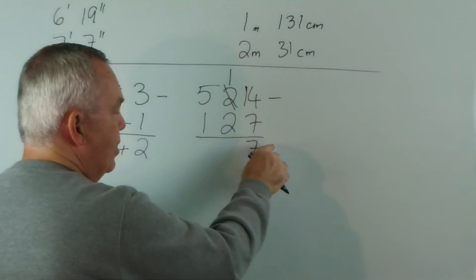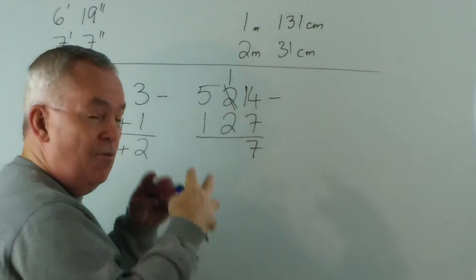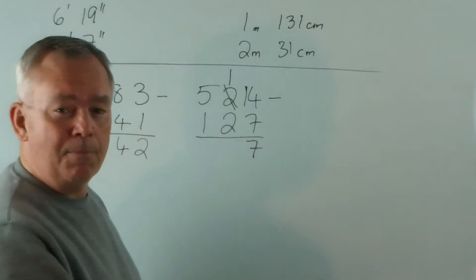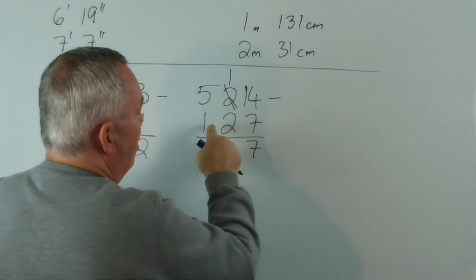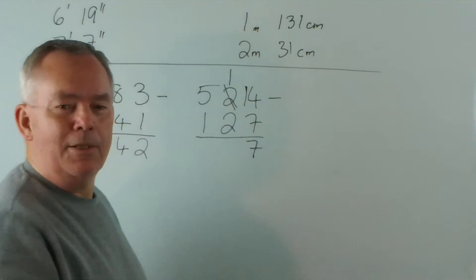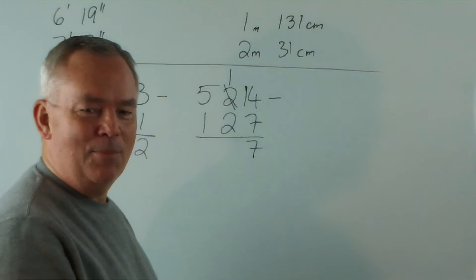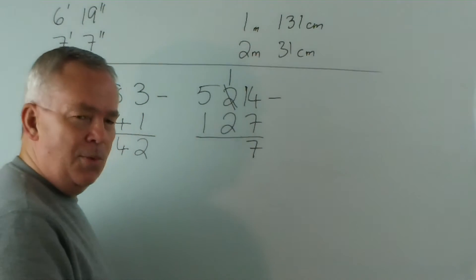The number on the bottom hasn't changed. The number on the top — its value hasn't changed. But we've played this game. We're instead of calling it twenty-four, we're now calling it tenty-fourteen. One lot of ten plus fourteen. It's still the same as twenty-four.